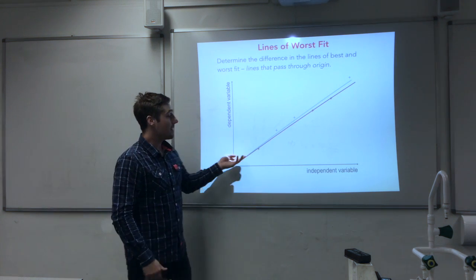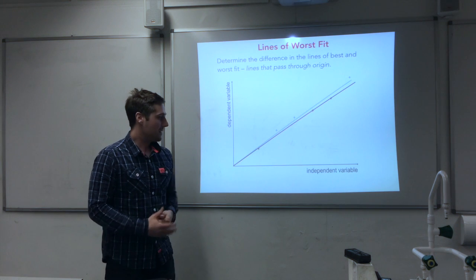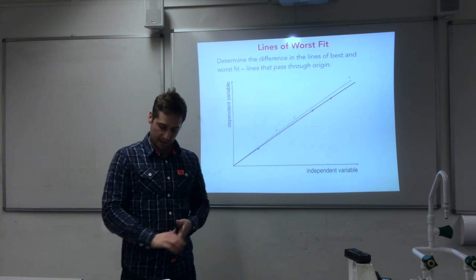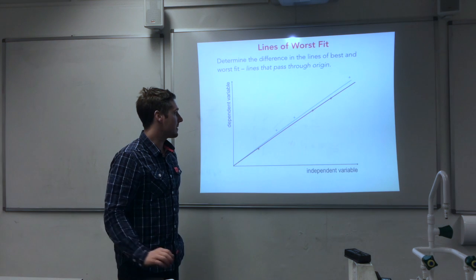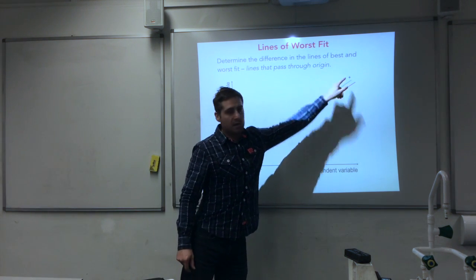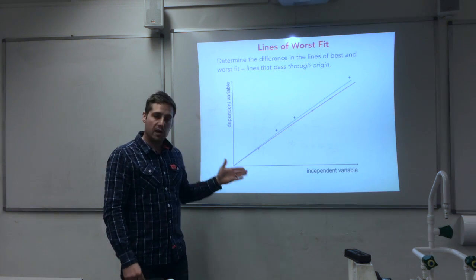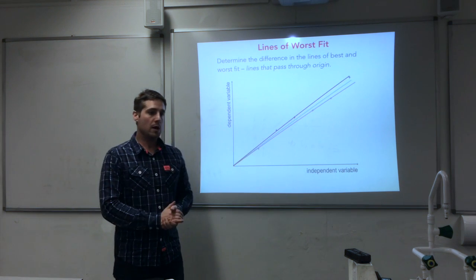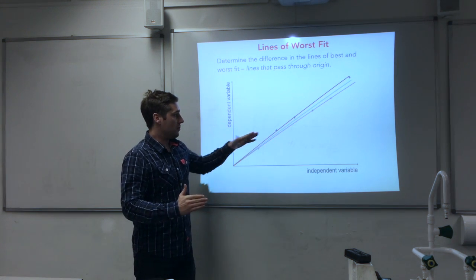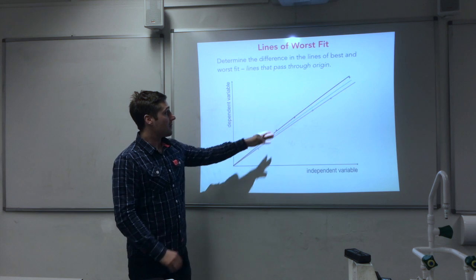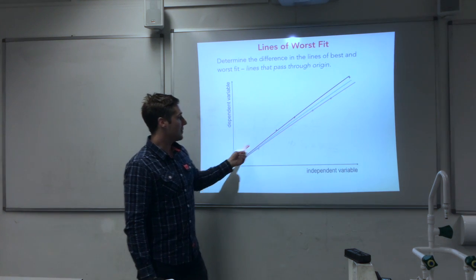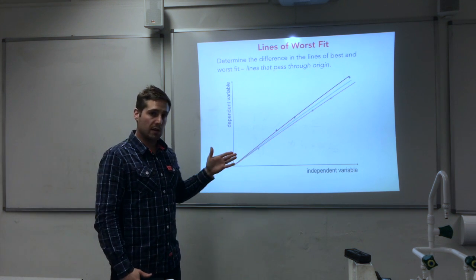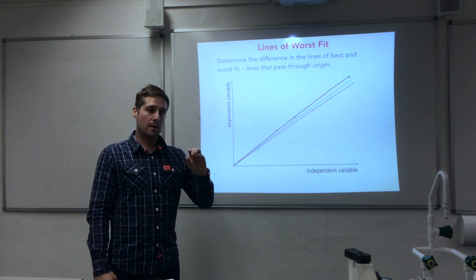So I could draw a line of worst fit through those three points, and that would be an acceptable line of worst fit. That's not the only possibility — you sometimes have a few possibilities. If I focus on these three plots here, you can see that they are also lining up, so we could use those to draw another line of worst fit. You only have to draw one line of worst fit for a given set of data, so you would use this one or this one, not both. So that's how you would draw a line of worst fit, following the sub-trend for data where the line of best fit goes through the origin.